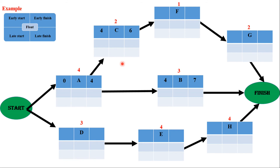Continuing the forward pass: the earliest start for activity F equals the earliest finish of activity C, which is 6, so its earliest finish is 6 + 1 = 7. The earliest start for activity G equals the earliest finish of activity F, which is 7, and its earliest finish is 7 + 2 = 9. For activity D, the earliest start is 0 since it has no preceding activity; its earliest finish is 0 + 3 = 3. Activity E's earliest start is 3 and earliest finish is 3 + 4 = 7. Activity H's earliest start is 7 and earliest finish is 7 + 4 = 11.